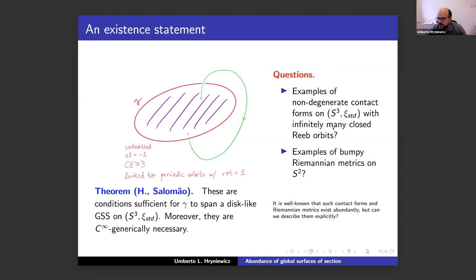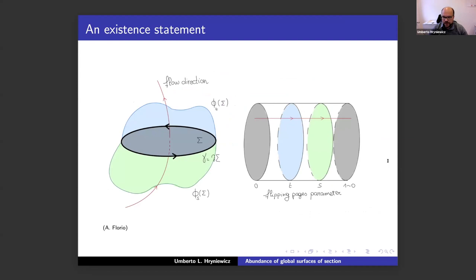Speaking of non-degeneracy: we know many contact forms are non-degenerate, but it's not easy to exhibit them explicitly. I don't know any examples of non-degenerate contact forms on S³ with infinitely many periodic orbits — they exist abundantly but it's very hard to write one down. Similarly, it's not easy to write down an example of a bumpy metric on S². Here one has a comment that an example with at least three orbits must happen — yes, that's exactly why I'm asking for a non-degenerate contact form with infinitely many orbits.